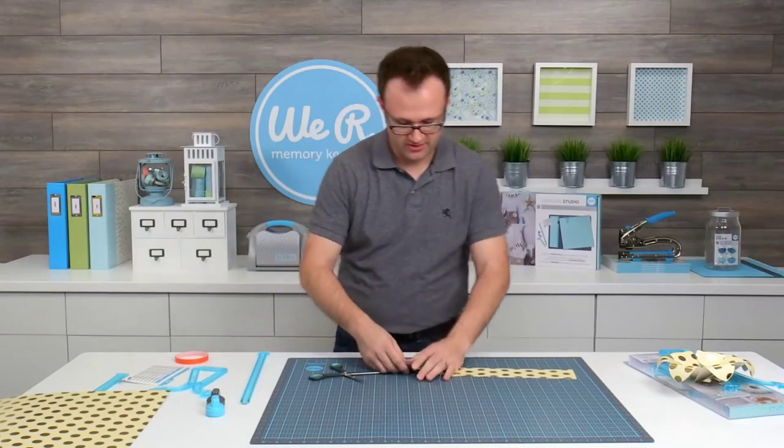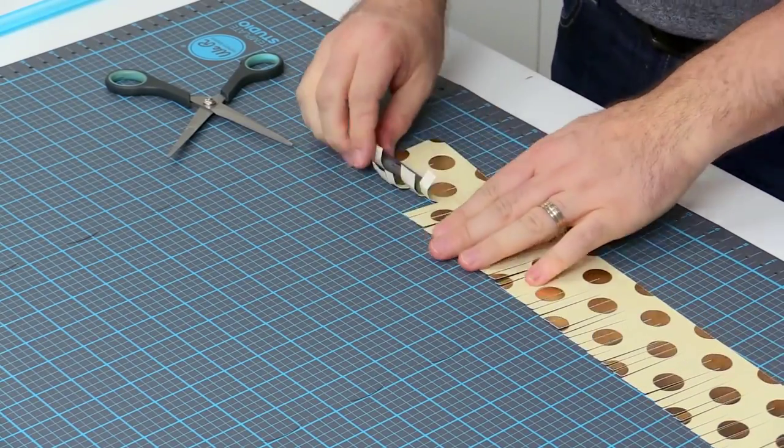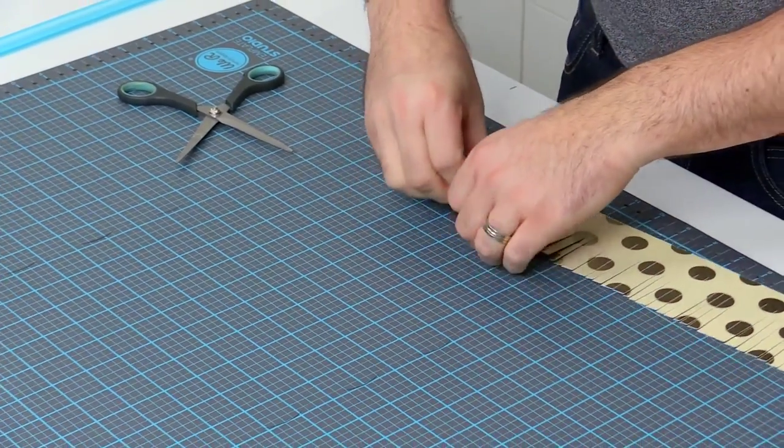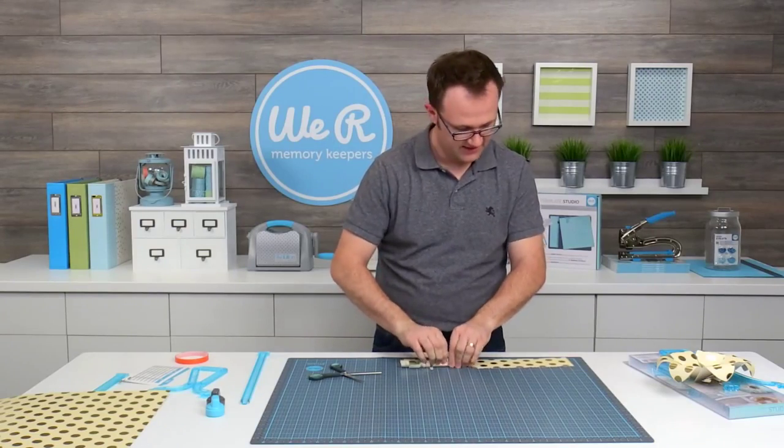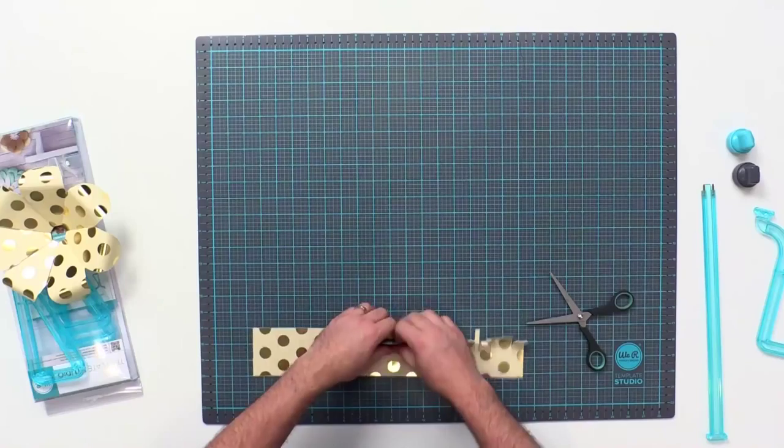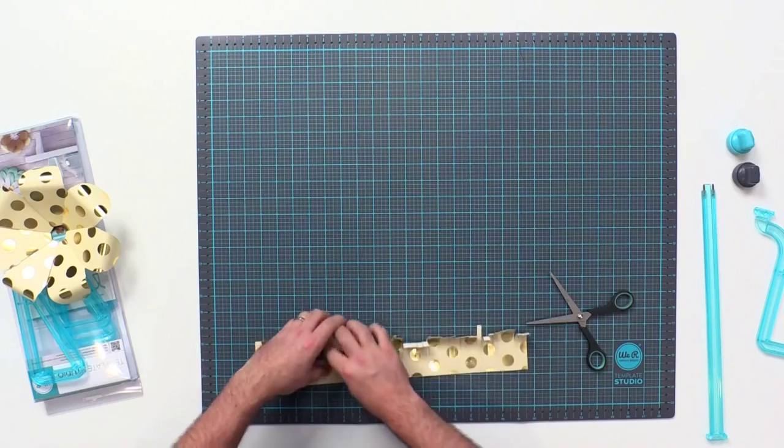Then you can take your pen, your marker, whatever you're using and just kind of curve it around a little bit. Just so that it has some dimension when it's finished.